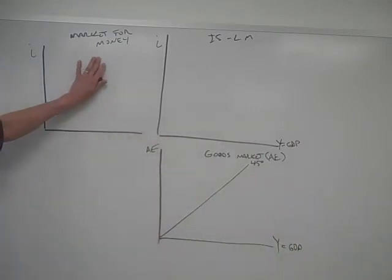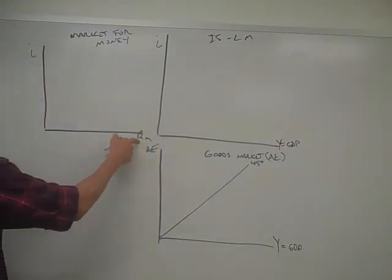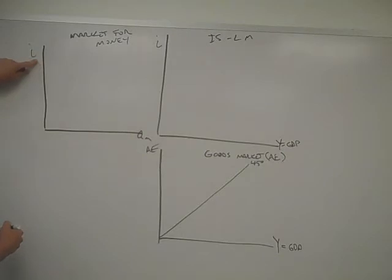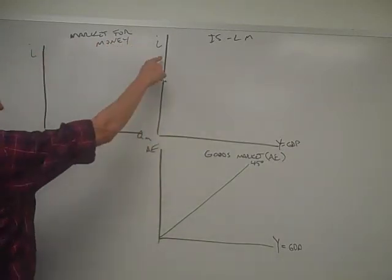Over here, we've got the market for money. We've got the supply and demand for money, and here we have the quantity of money, but we're not too concerned about that. This is what we want out of this market. We want to know what the interest rate is because that axis informs that axis. That's the same as that.